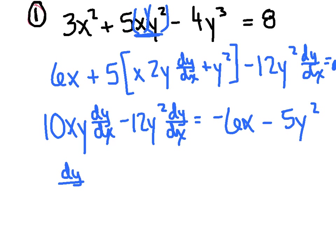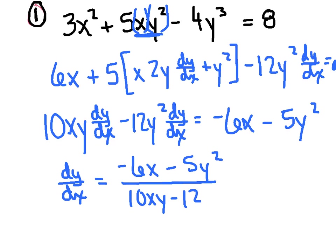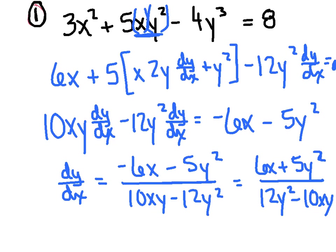Last but not least, we're going to factor out the dy dx as a little bit of a GCF. And then we're going to take the quantity that was left over and divide it. So we've got 10xy minus 12y squared on the bottom. Now, here's a pretty common trick. If three out of the four terms in my answer are negative, they're probably going to go ahead and divide both top and bottom by negative one. So we're going to end up with 6x plus 5y squared all over, let's see, it would be probably 12y squared minus 10xy. And that's probably how they'd choose to express their answer.